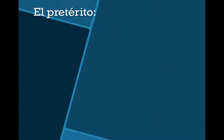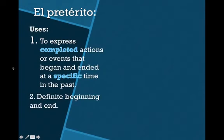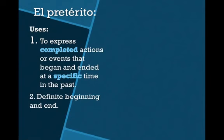Here's an easy way to determine which one you use in which situations. El pretérito is more specific — it's more precise. Associate the P in pretérito with precise. You're expressing a completed action that began and ended at a specific time in the past. It has a definite beginning and end.